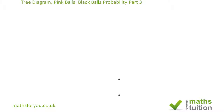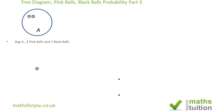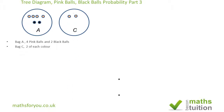Well hello and welcome to part three of my series on probability. This time it's called 'Three Diagrams, Pink Balls, Black Balls and Probability.' Bag A has four pink balls and two black balls, and Bag C has two pink balls and two black balls.